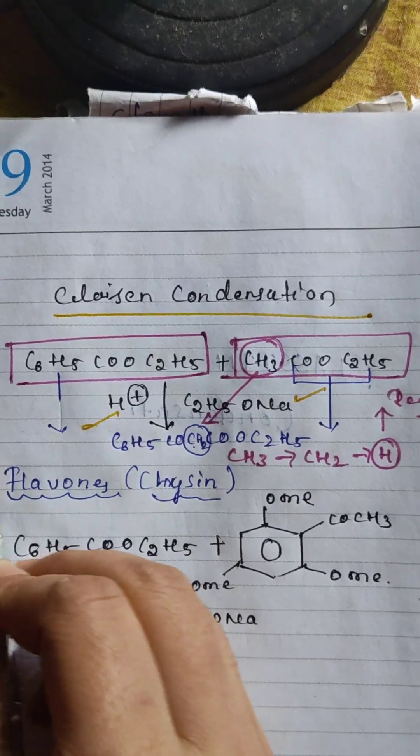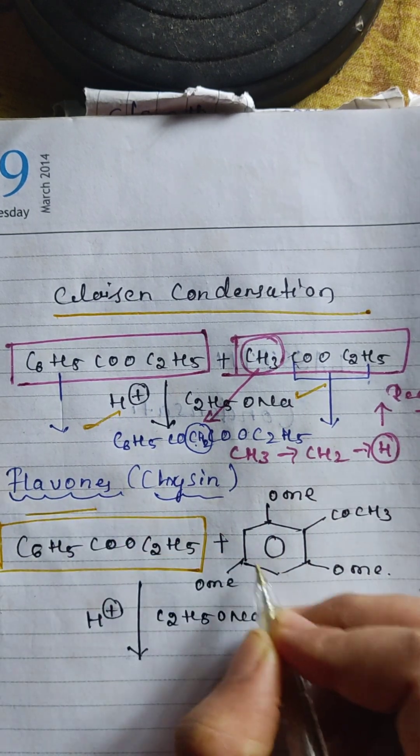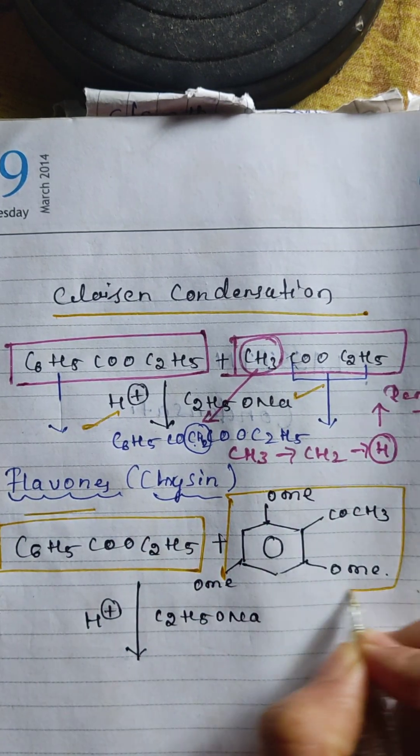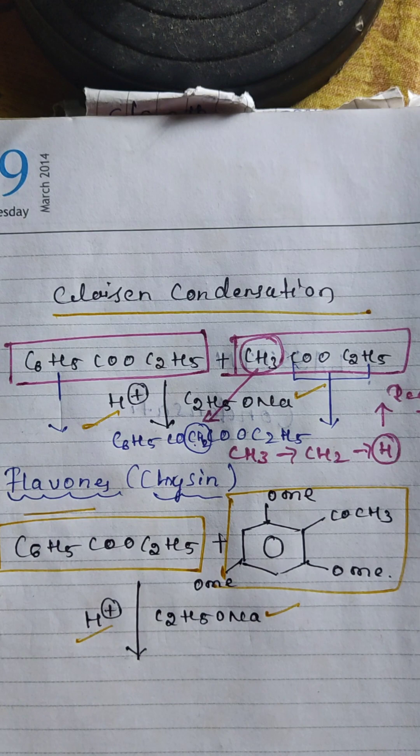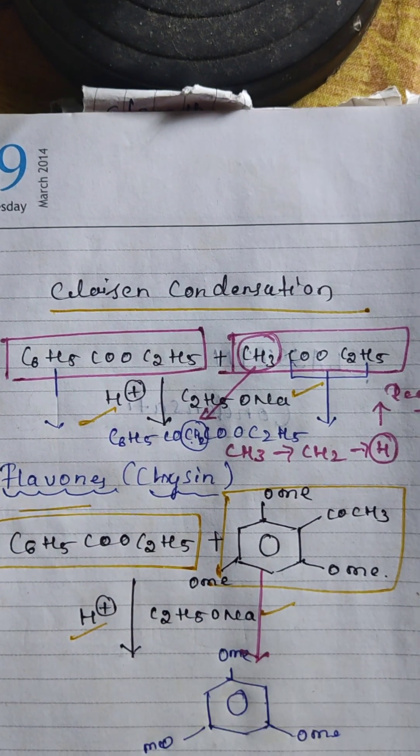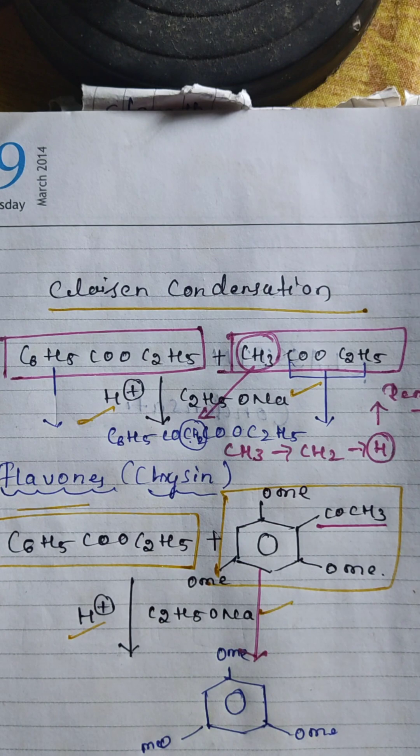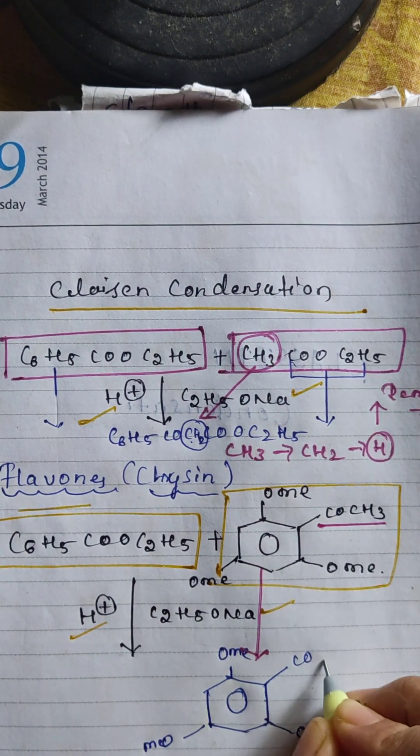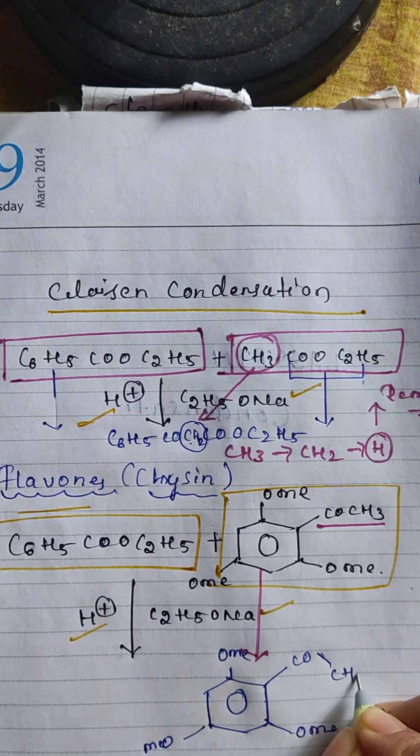Let's discuss the flavone synthesis or Claisen synthesis. How to make the flavone? We take phenyl ethyl acetate, C6H5-CO2-C2H5, and 2,4,5-trihydroxy acetophenone or 2,4,6-trihydroxy acetophenone. This is an OMe group attached with the CO-CH3 group.